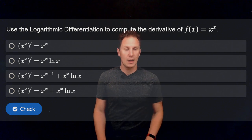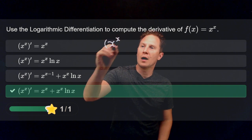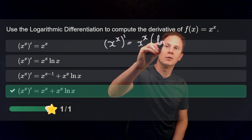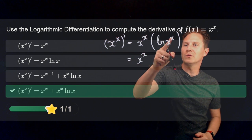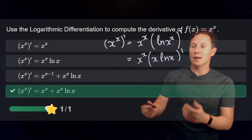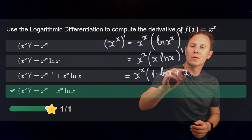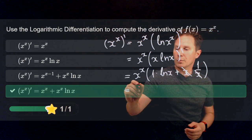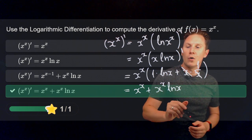I hope you paused it, and I've selected the last option. The derivative of x to the x is what we are after, and we use the formula that the derivative of f is f times the derivative of the natural logarithm of f. Before differentiating, we use a law of logarithms to bring the exponent x down in front of the logarithm, and then we are differentiating the product of x and ln of x. Using the product rule, we get the derivative of x being 1 times ln of x, plus x times the derivative of ln of x, which is 1 over x. So we get x to the x times ln of x plus x to the x times 1, giving us the derivative of x to the x.